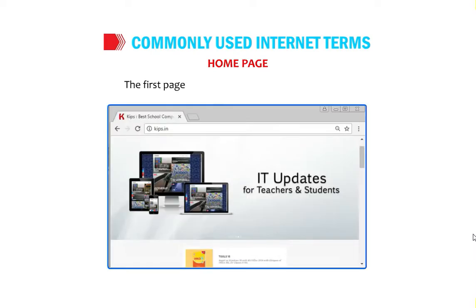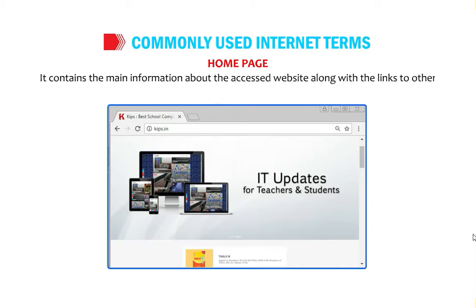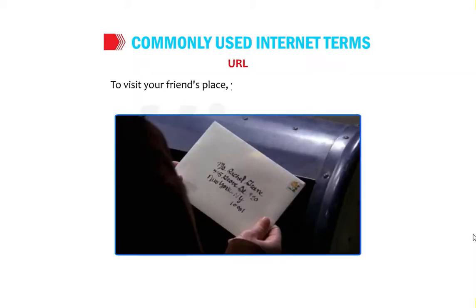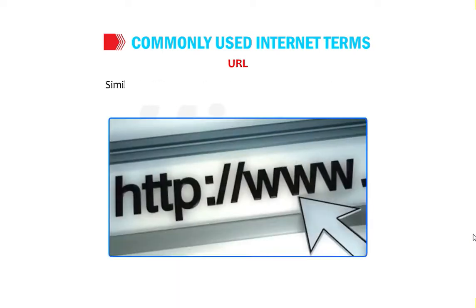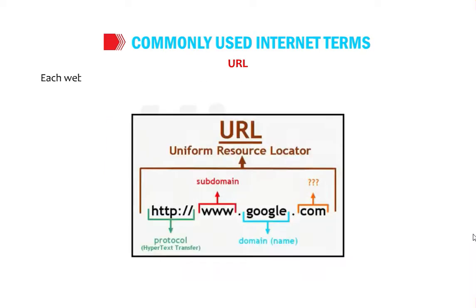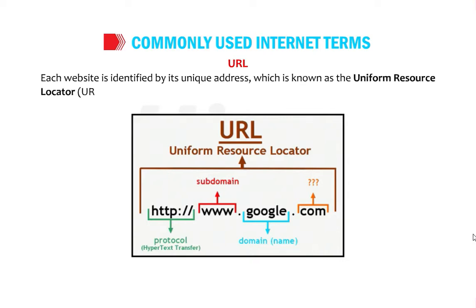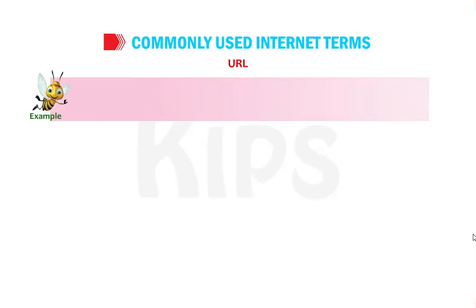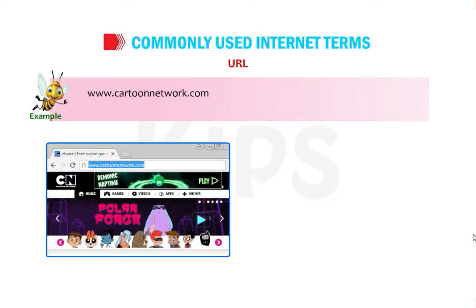The home page is the first page of a website. It contains the main information about the website along with links to other pages. URL — to visit your friend's place you need to know his address; similarly, to visit any website you need to know its address. Each website is identified by its unique address, known as the Uniform Resource Locator (URL). The URL is entered in the address bar of a web browser.